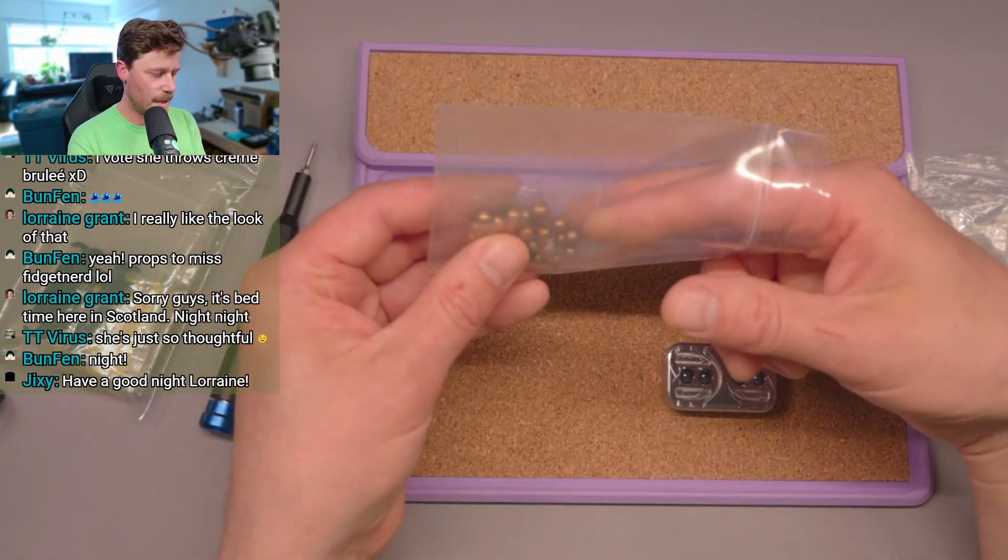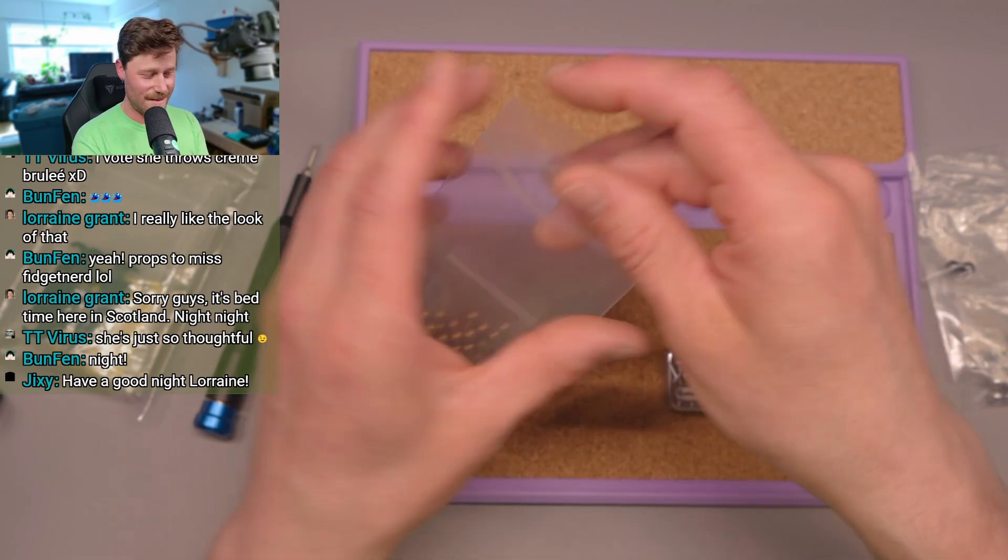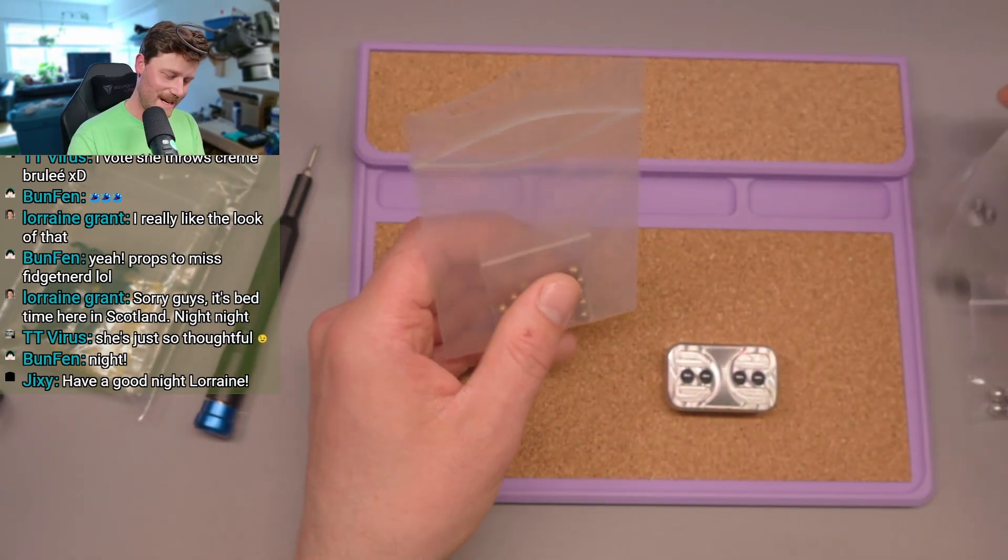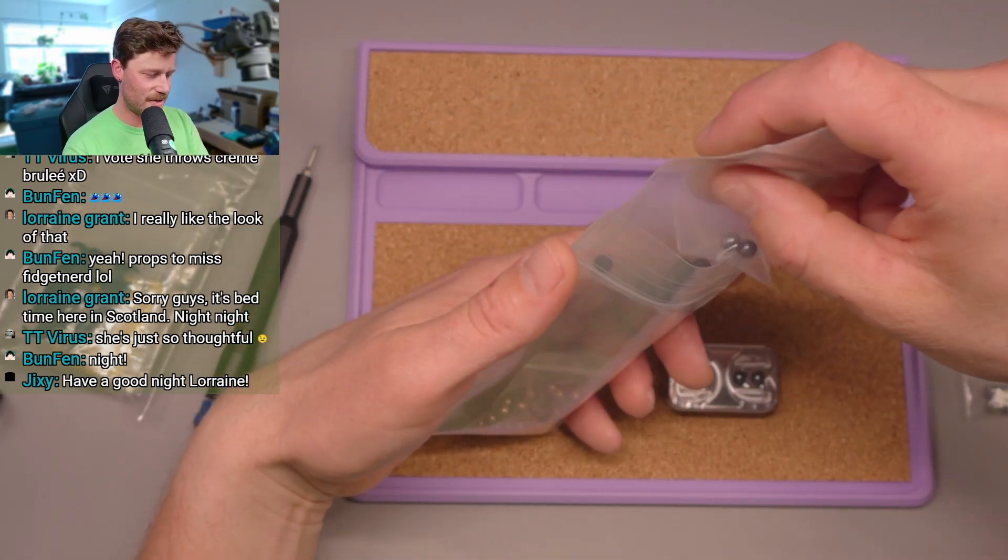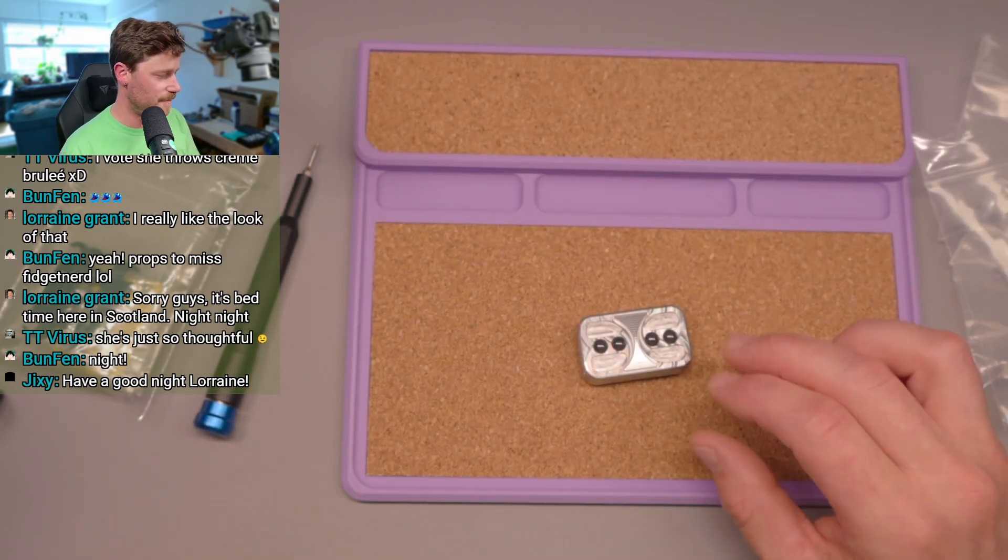And then there's a whole bunch of brass balls that I bought. I even saw tungsten balls on Amazon at one point, but I didn't get those because I don't want it too heavy. So we got all these balls, we can try to put different balls in.